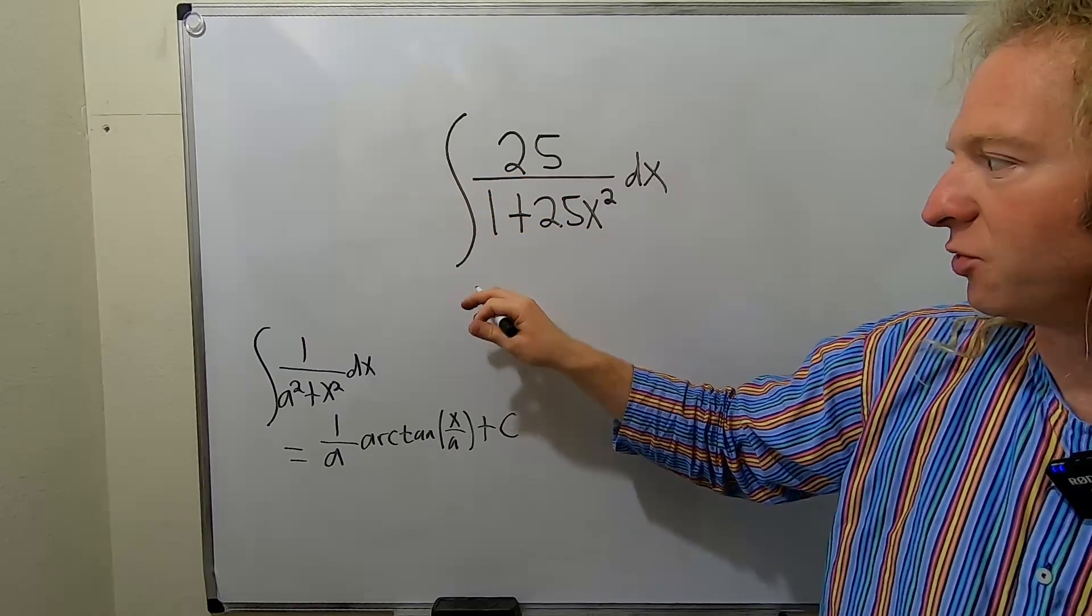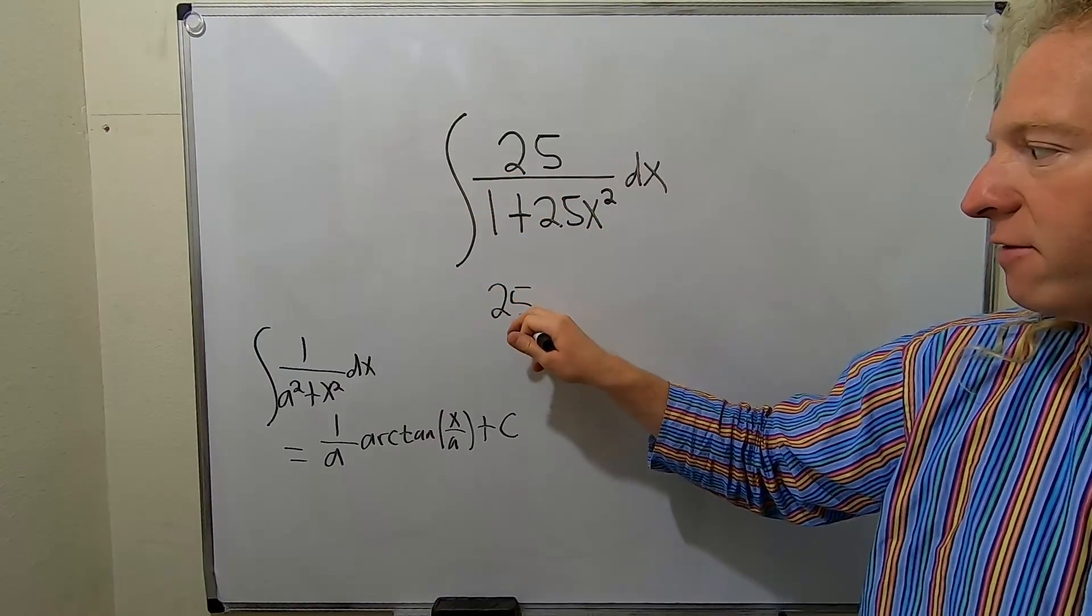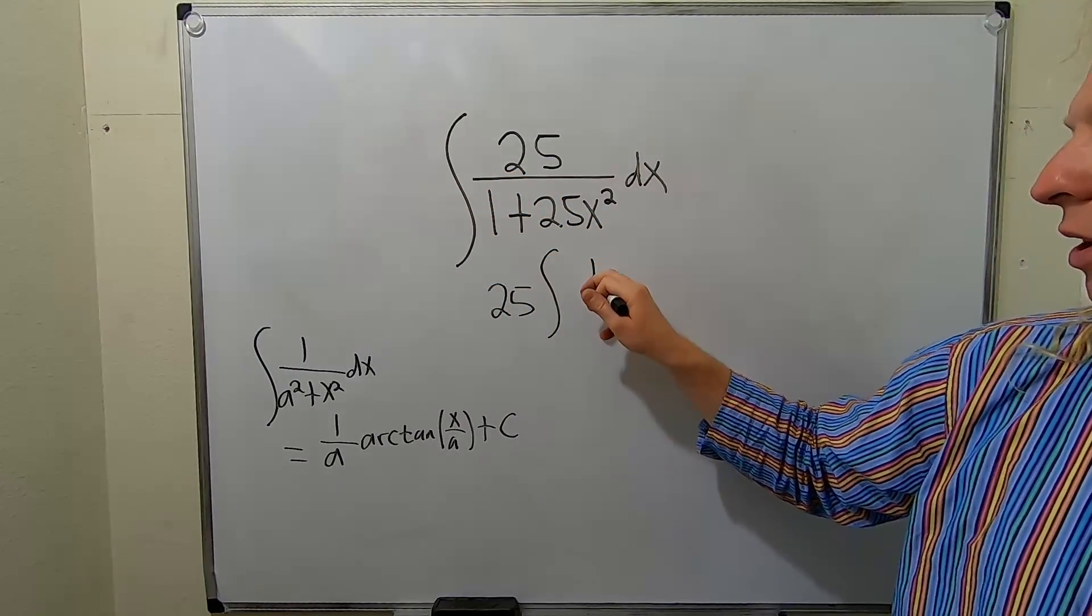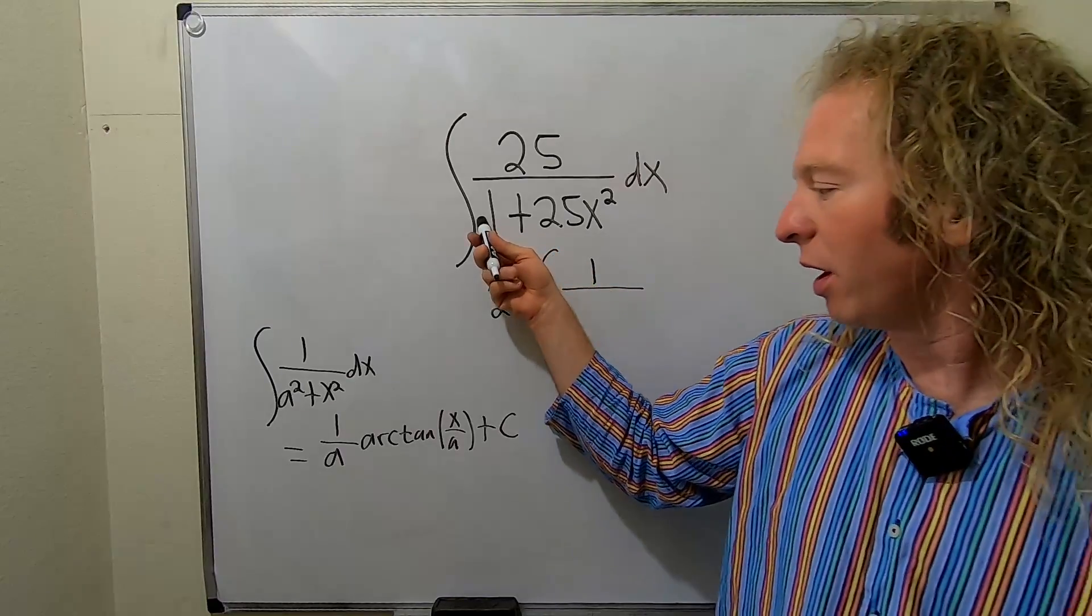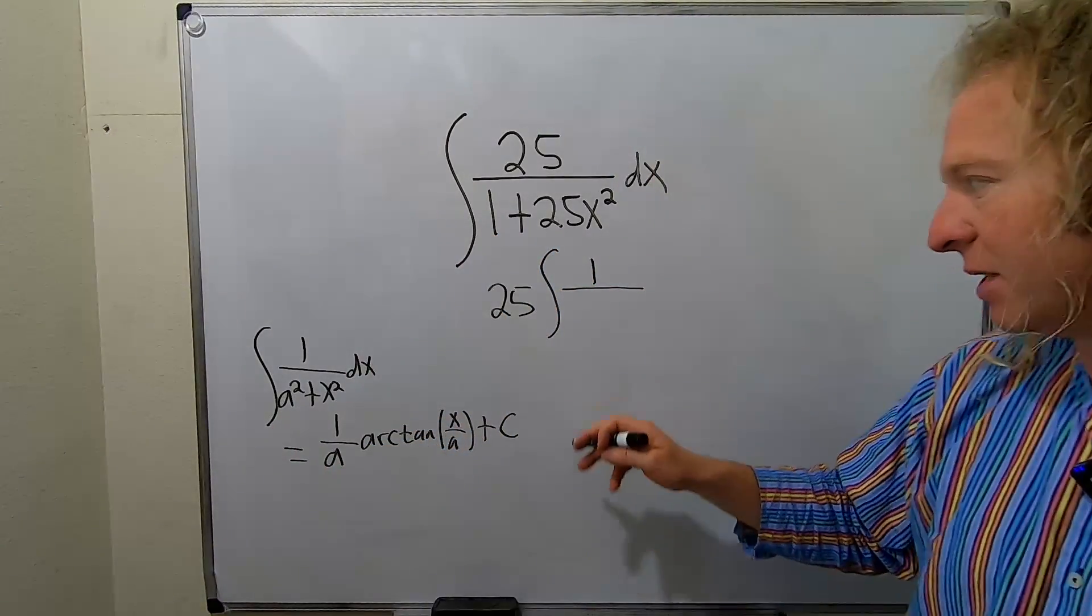So the first thing we'll do is I'll pull out the 25. So 25 integral, 1 over, and the 1 is really 1 squared. That's going to be our a. A will be equal to 1.